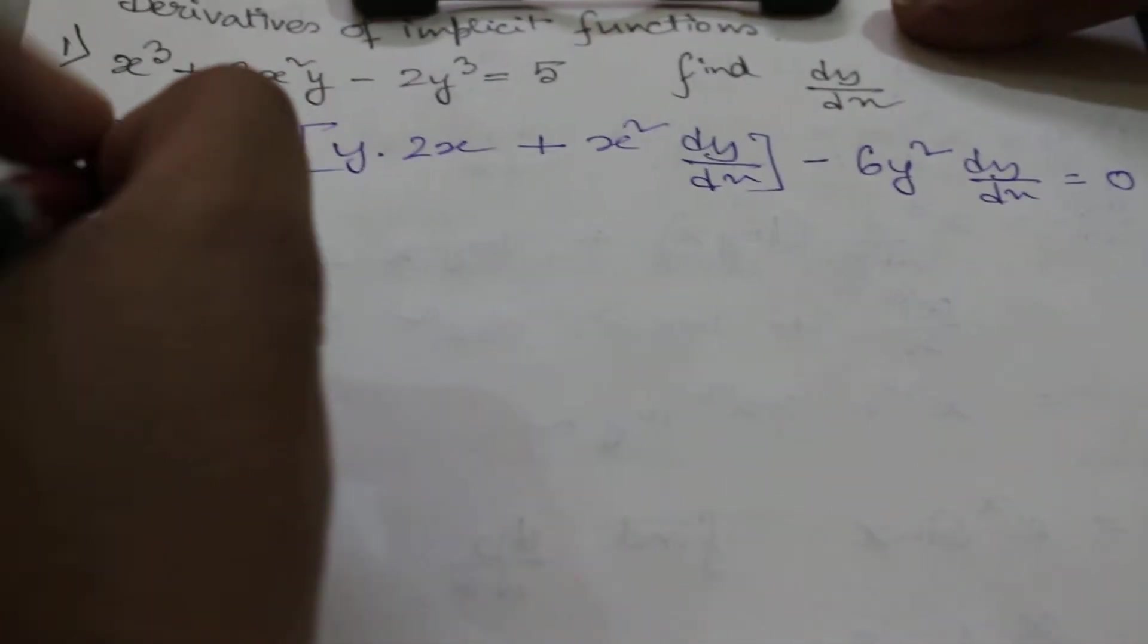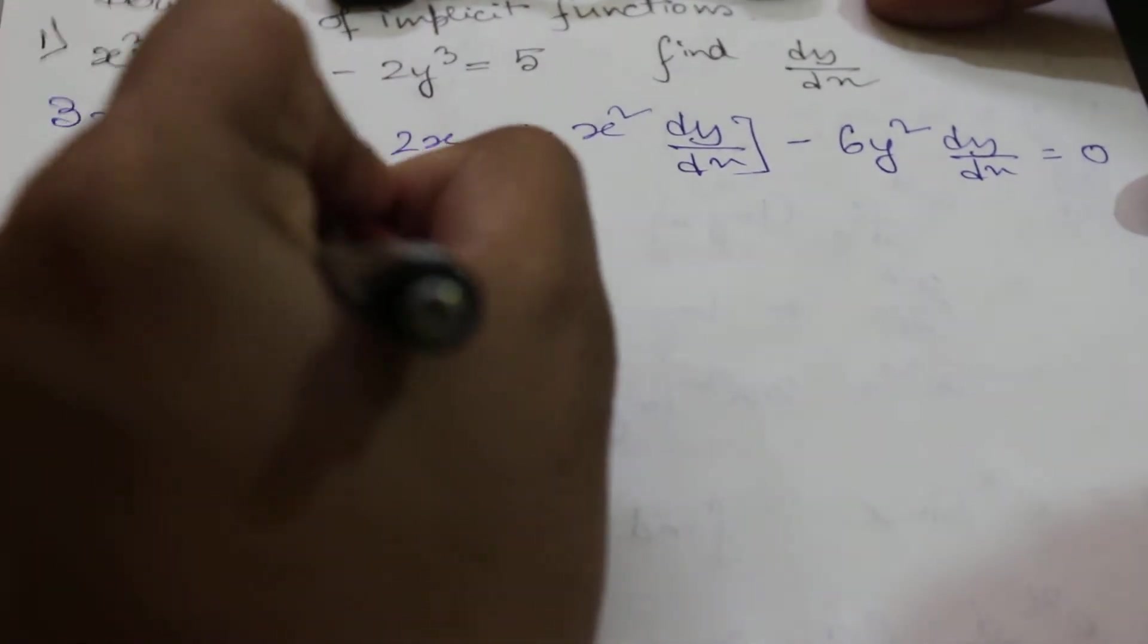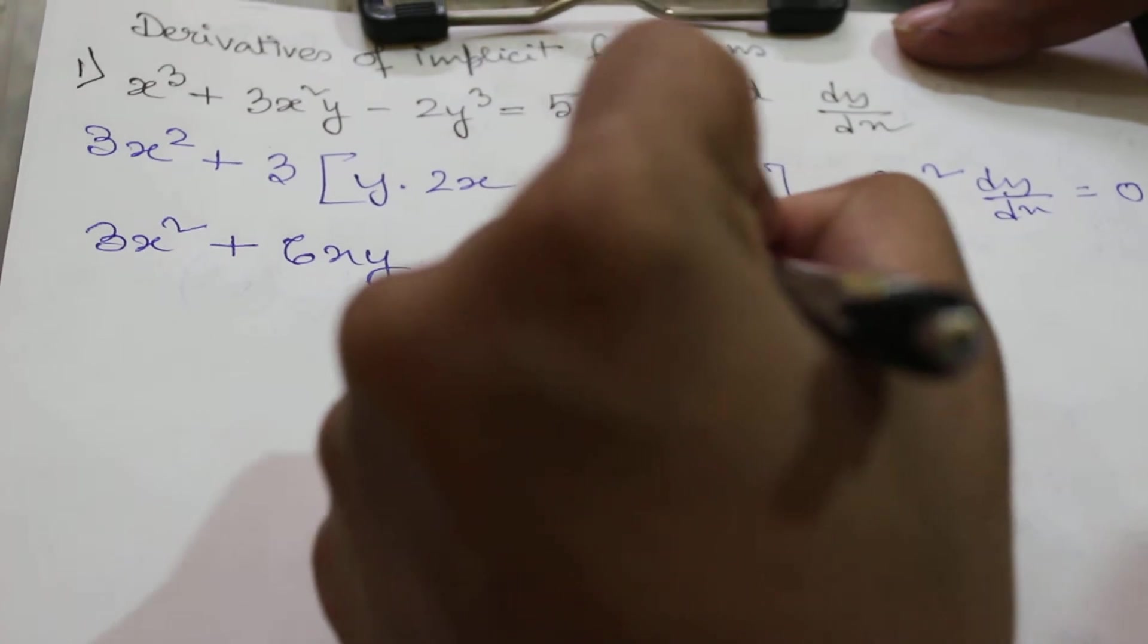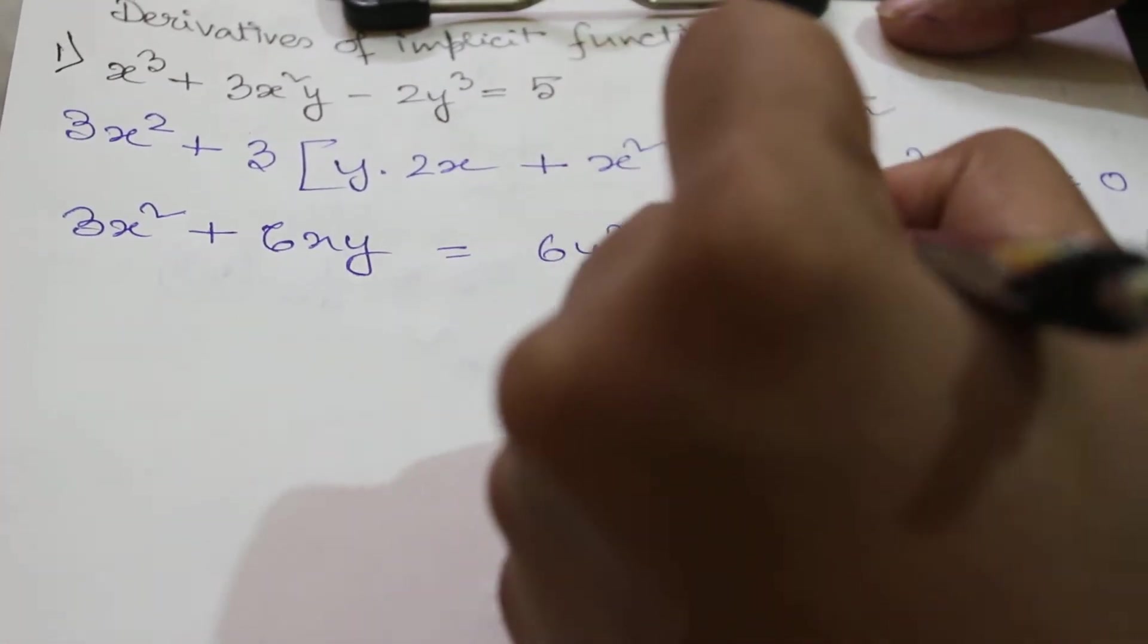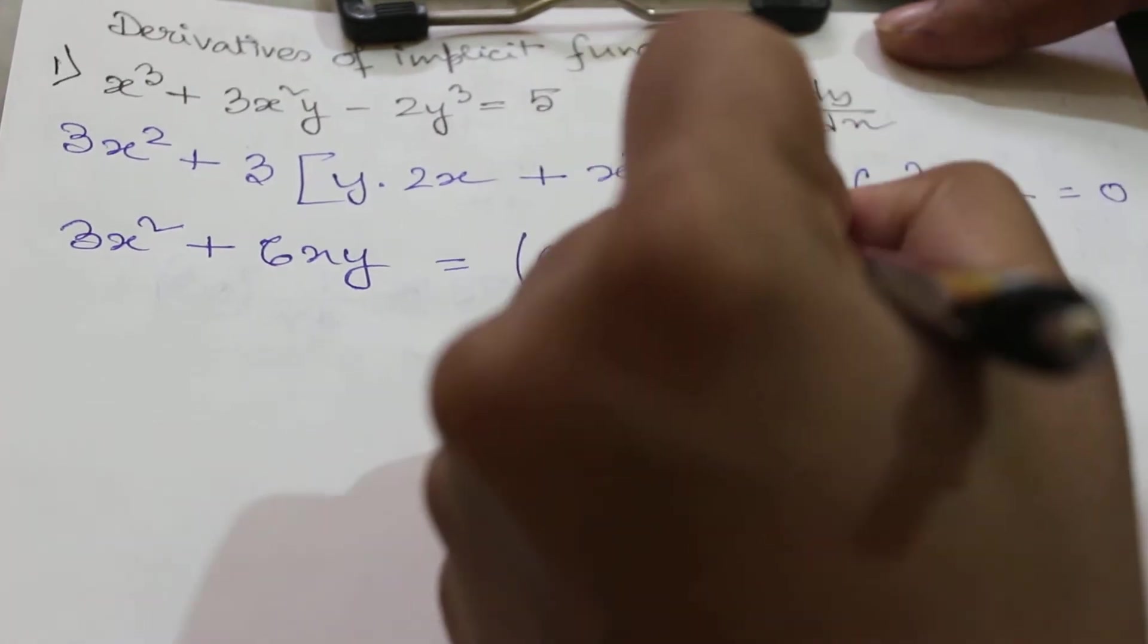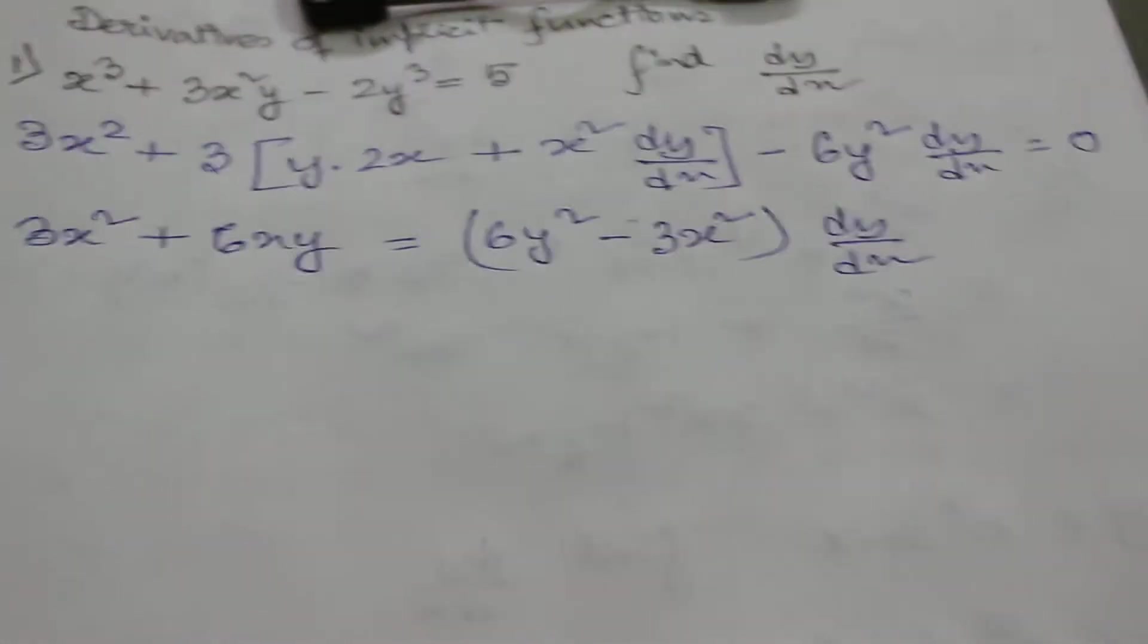Now we will take dy/dx term on one side and others on another. So this will be 6xy is equal to 6y² minus 3x² dy/dx.